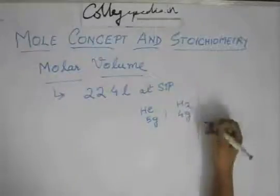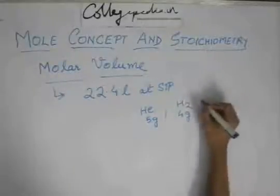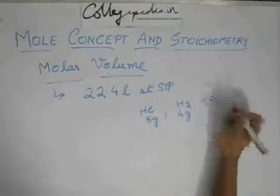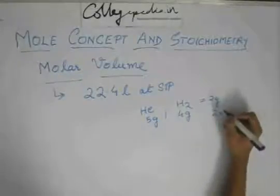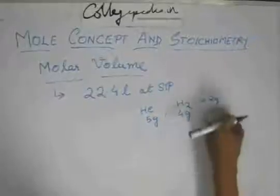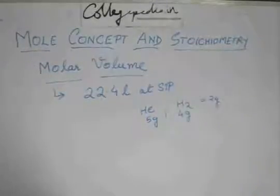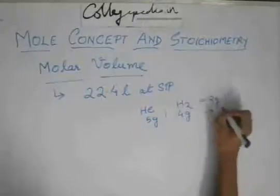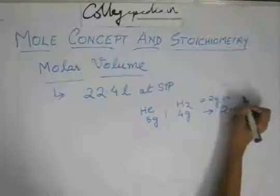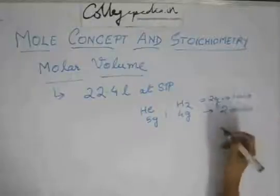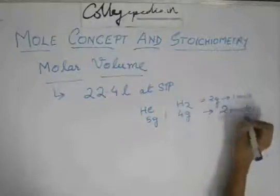H2 means its molecular weight is 2 gram. So 4 gram means 2 moles because 2 gram is 1 mole. So this is 2 moles. What would its volume be? 2 into 22.4 litre, that temperature and pressure are STP.